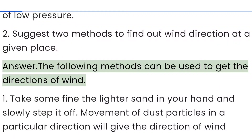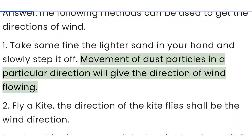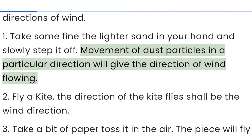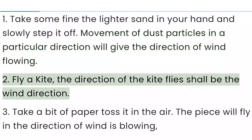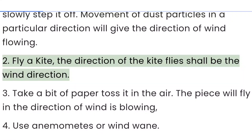Question 2: Suggest two methods to find out wind direction at a given place. Answer: The following methods can be used to get the direction of wind. (1) Take some fine, lighter sand in your hand and slowly let it off — movement of dust particles in a particular direction will give the direction of wind flowing. (2) Fly a kite — the direction the kite flies shall be the wind direction.